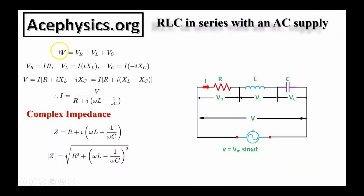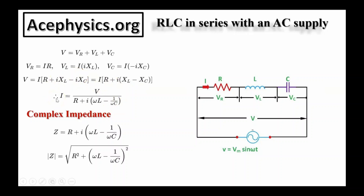In a series RLC circuit, the voltage from the power supply must equal the voltage across the resistor plus the voltage across the inductor plus the voltage across the capacitor. The voltage across the resistor is IR, the voltage across the inductor is I times inductive reactance (multiplied by i, the square root of negative one, because current lags voltage by 90 degrees), and the voltage across the capacitor is I times negative i·X_C (because current leads voltage by 90 degrees). Ohm's law for AC circuits says V equals I times the impedance. The complex impedance is R + i·X_L − i·X_C, and the magnitude of the impedance is the square root of R² + (X_L − X_C)².